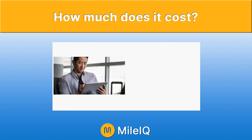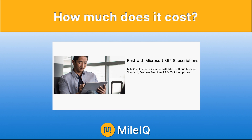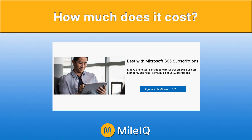However, there is a better way to get it, and that is if you have an existing Microsoft 365 subscription. Specifically, it is included with the Microsoft 365 Business Standard, Business Premium, E3, and E5 subscriptions. All you need to do is download the app and sign in with your Microsoft 365 account and it should automatically enable all the features for you.